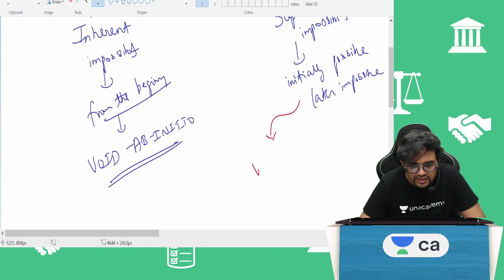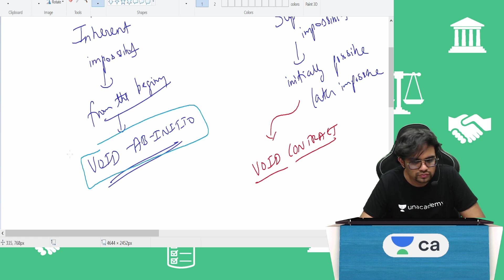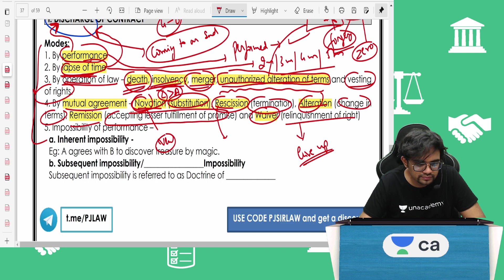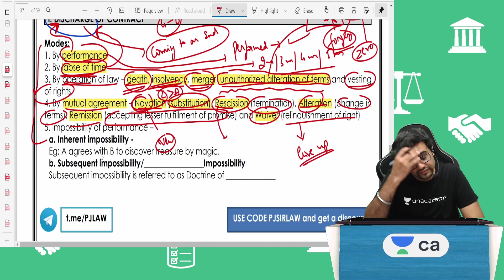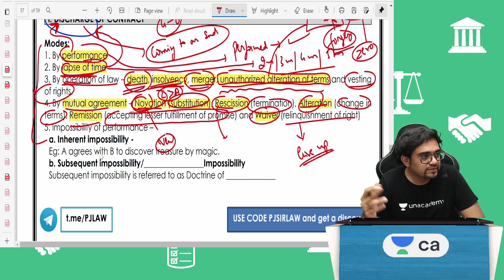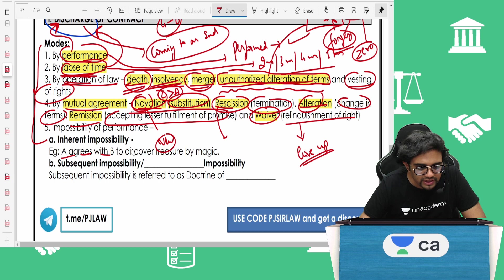Subsequent impossibility is like a void contract. Inherent impossibility is void ab initio. Subsequent impossibility is void contract. Initially valid, later it becomes void. For example, A agrees with B to discover treasure by magic. This is inherently impossible, from the beginning itself it is void.